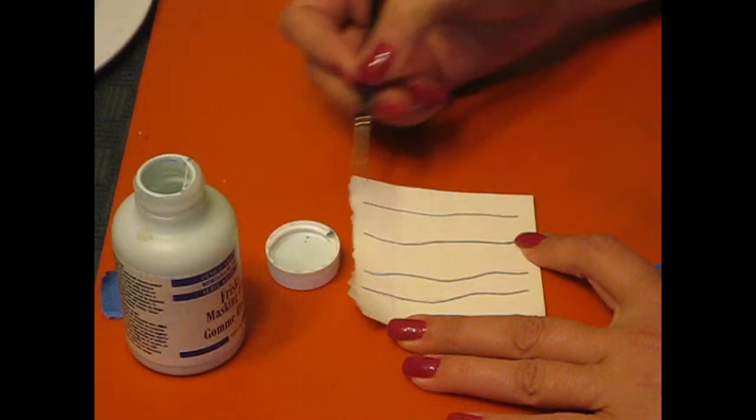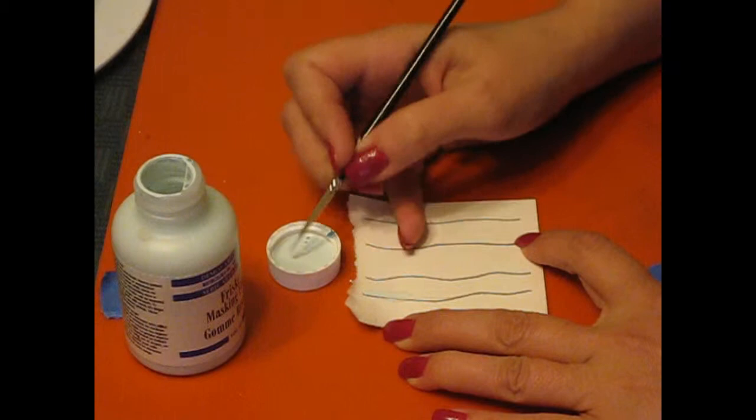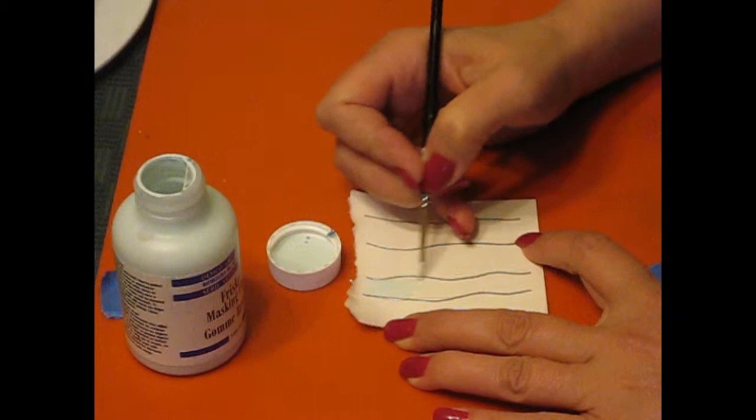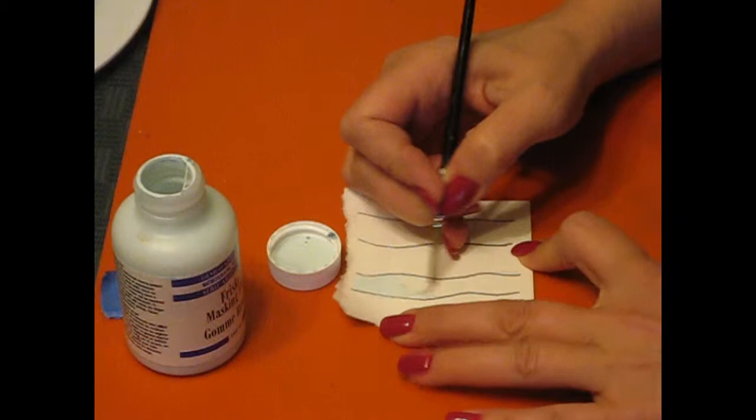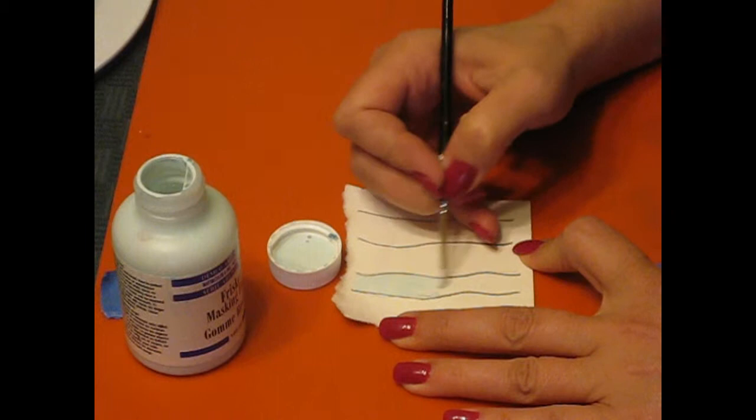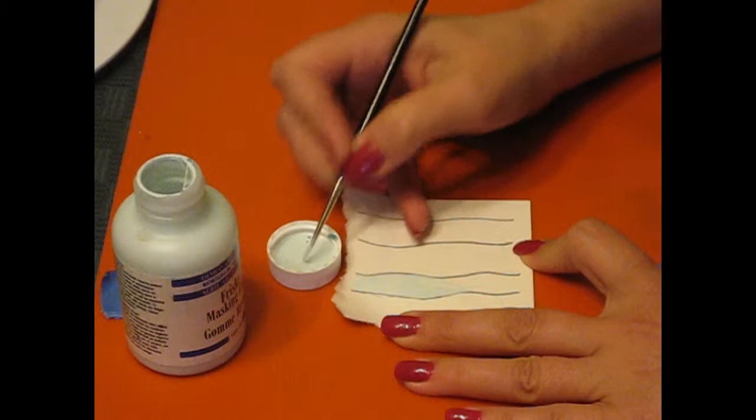So it's not rocket science. You just take your brush and apply it. All you're doing really is simply brushing on the masking fluid. Now you don't get a second shot at this. Don't overstroke it. There's that word again, overstroke.